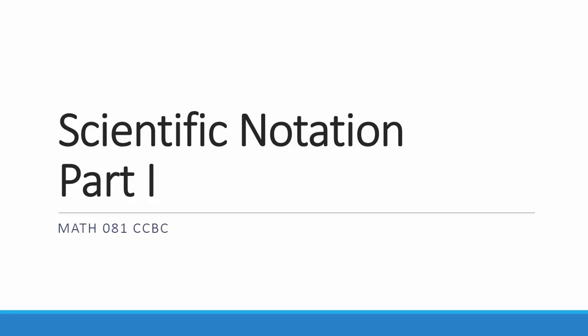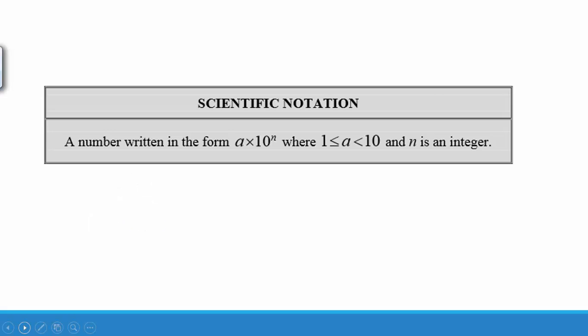In this video we will begin studying scientific notation. Scientific notation is a special way to write a number. It is in the form a times 10 to the power n, where a is greater than or equal to 1 but less than 10, and n, the power on the 10, is an integer.